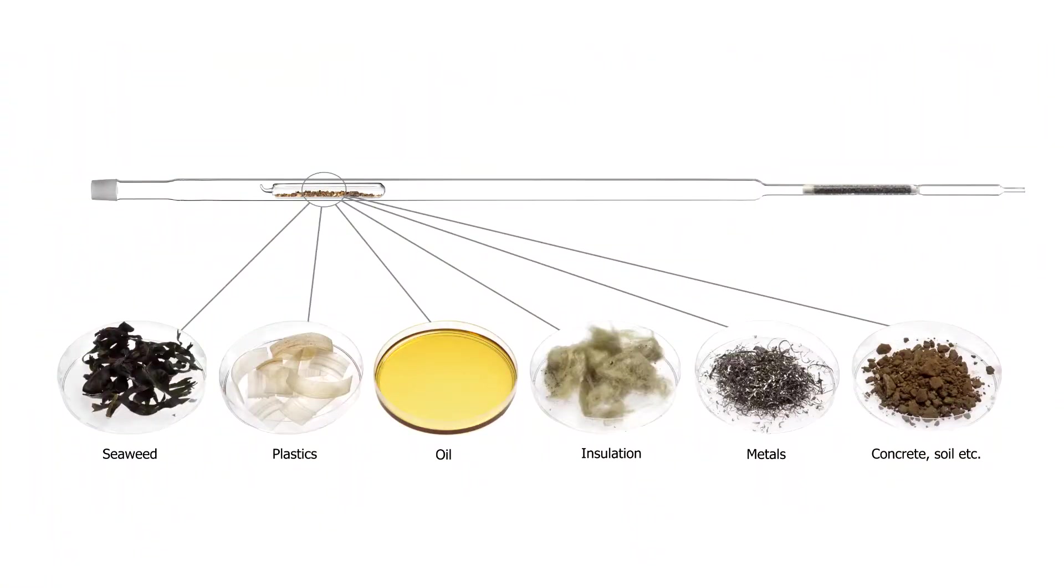To each combustion tube is attached a glass end cap through which flows a supply of carrier gas that transports volatile sample decomposition products towards the catalyst and then the bubblers. The carrier gases can be air, air and oxygen, or pure oxygen.